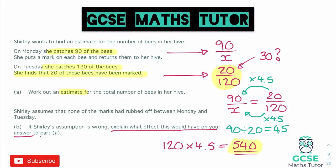So our answer to Part B: our estimate would decrease. If more marks had rubbed off, in our working we would have multiplied by a smaller number, and therefore 120 wouldn't have produced as large a result — it might have gone only to 360 rather than 540. So our estimate would decrease. There is our answer to this question on capture-recapture for real-life examples. There are other types of capture-recapture examples too — go into the description for the full lesson on this topic. I hope you found that useful. Don't forget to like, comment, and subscribe, and I'll see you for the next one.